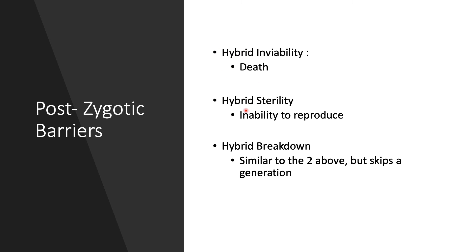There's also hybrid sterility. Two individuals from different species mate and their hybrid offspring may be born and be somewhat healthy, but they will have an inability to reproduce. A very common example of this is the mule.